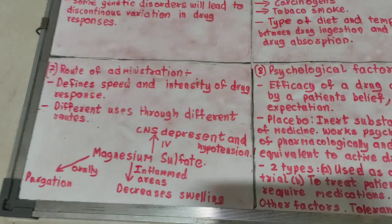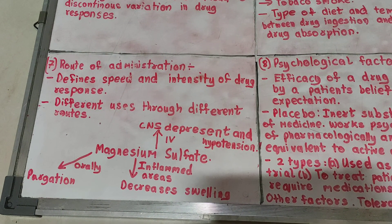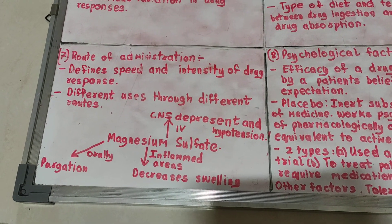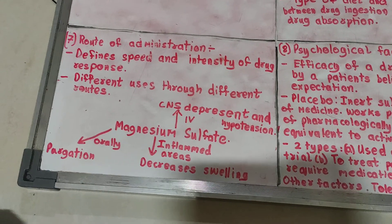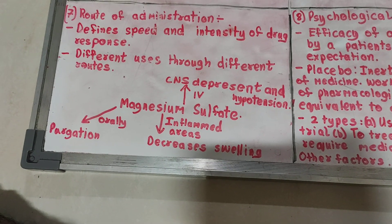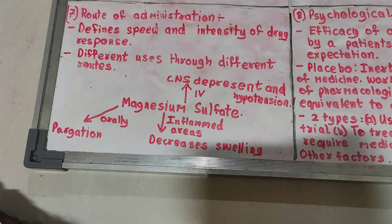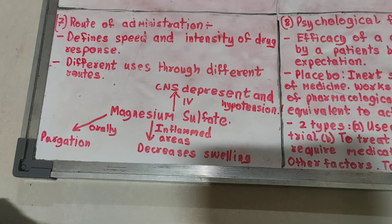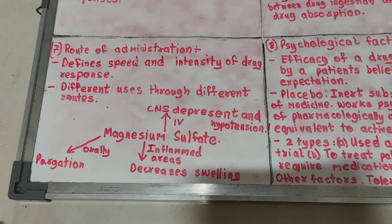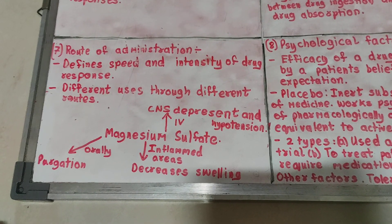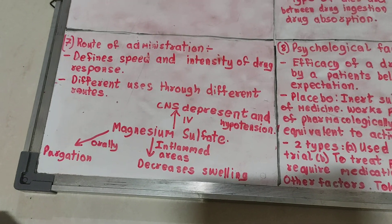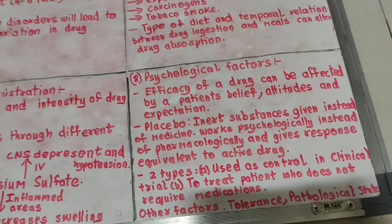The next factor is route of administration, which is basically how the drug is entering into the body. It defines the speed and intensity of the drug response. For example, magnesium sulfate when given orally acts as a purgative, helping in evacuation of bowels. When applied on an inflamed area it helps in decreasing swelling. When given intravenously (IV) it acts as a CNS depressant and causes hypotension. So each route has a different use.